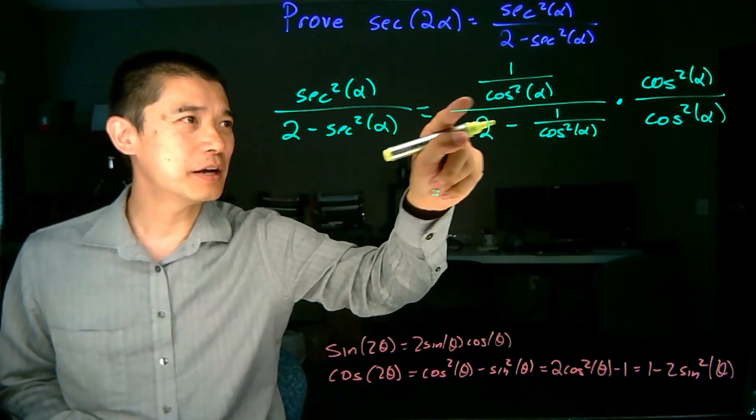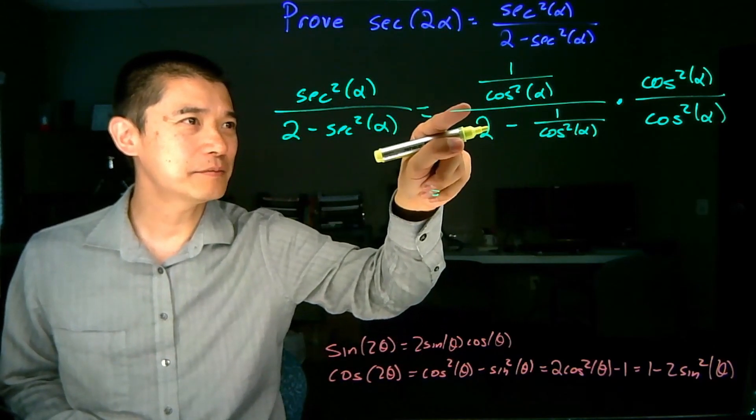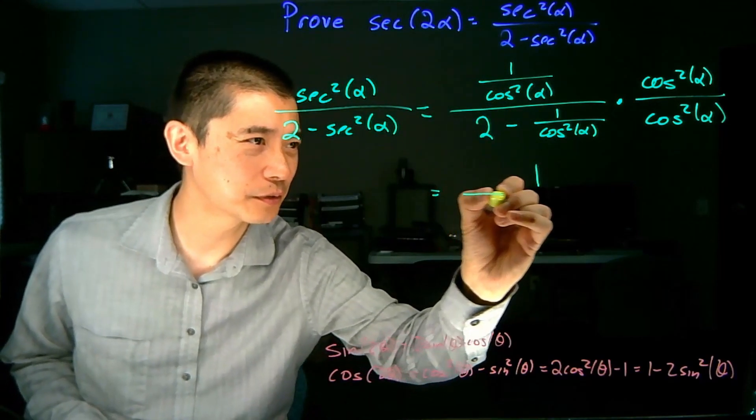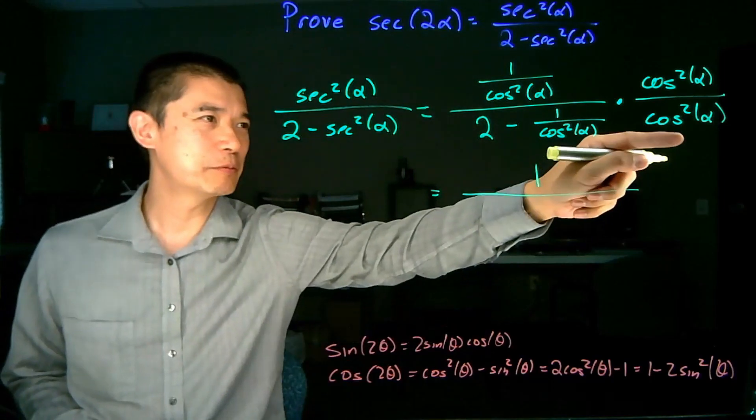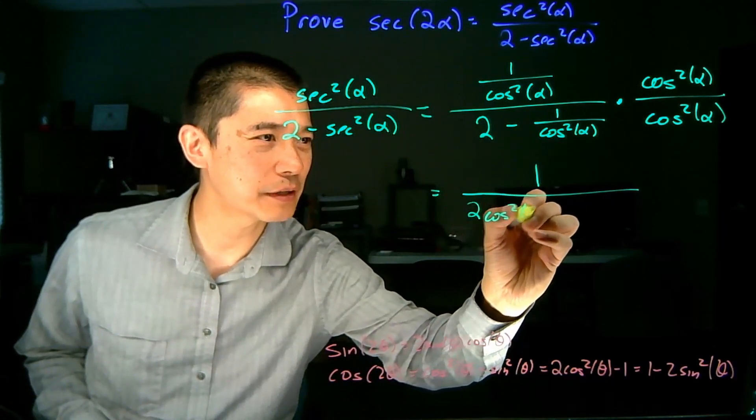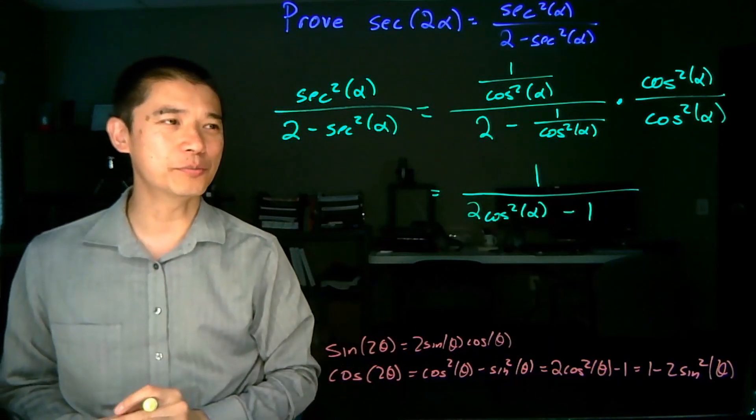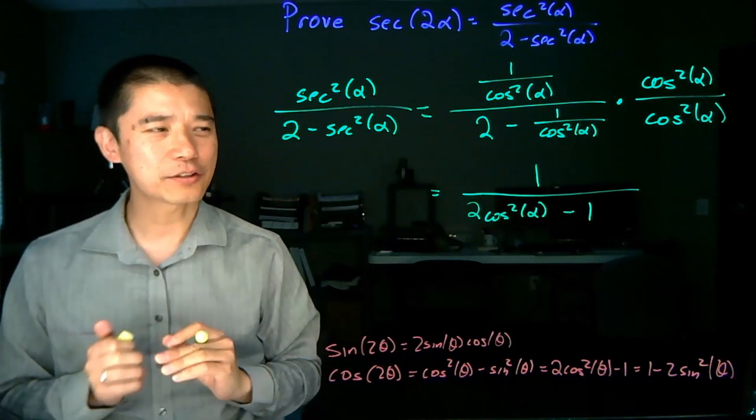So let's see what we have. If we multiply by cos squared alpha, that cancels out that. So we have just a 1 in the numerator over, well we distribute, 2 cos squared alpha minus 1. And the cancellation happens just like it did in the numerator.